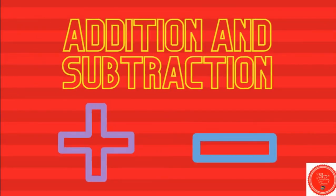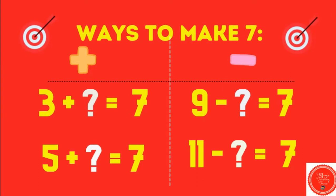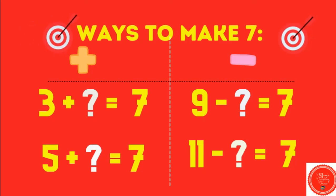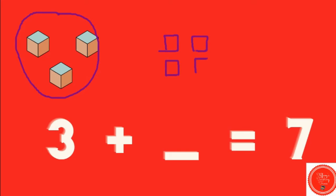Let's practice some addition and subtraction. Ways to make seven — remember seven is our target number, so we want that to be our answer. Let's start with our first problem. Three plus what number equals seven? So I already have three here, so I can count on until I get to seven: three, four, five, six, seven. How many did I have to add? Four. Three plus four equals seven.